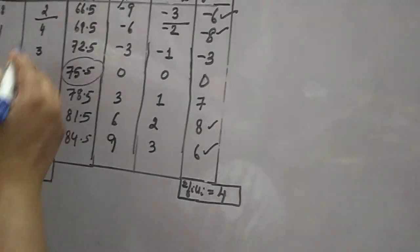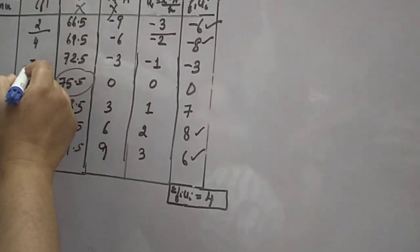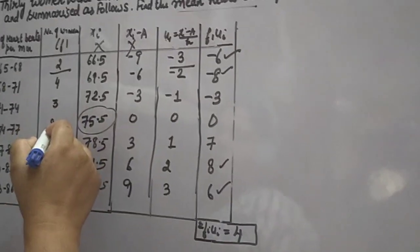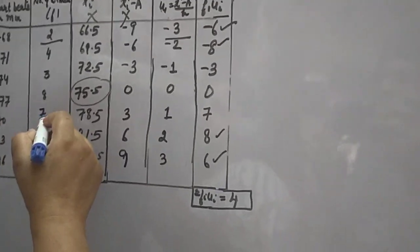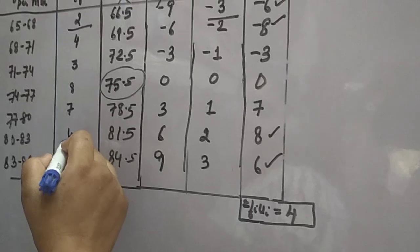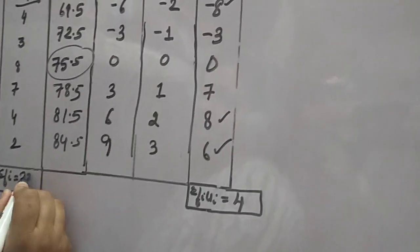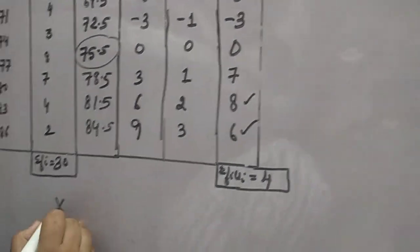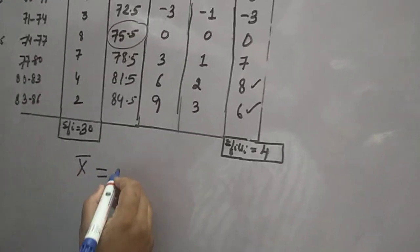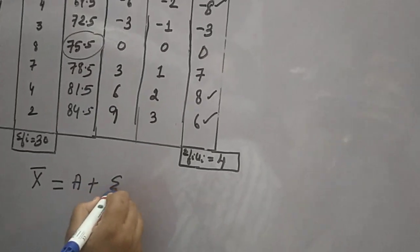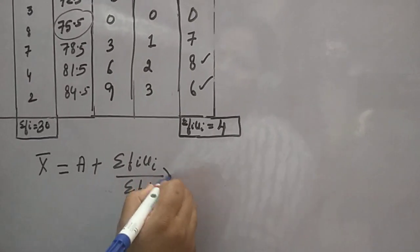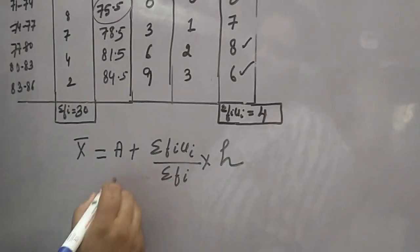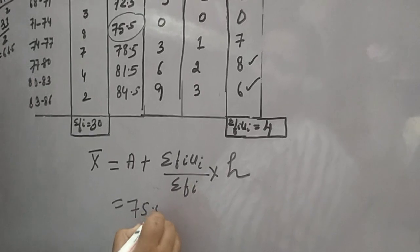Sum of fi is 2 plus 4 is 6, plus 3 is 9, plus 8 is 17, plus 7 is 24, plus 4 is 28, plus 2 is 30. The formula for step deviation method to find mean is: x̄ = A + (sum of fi ui / sum of fi) × h.